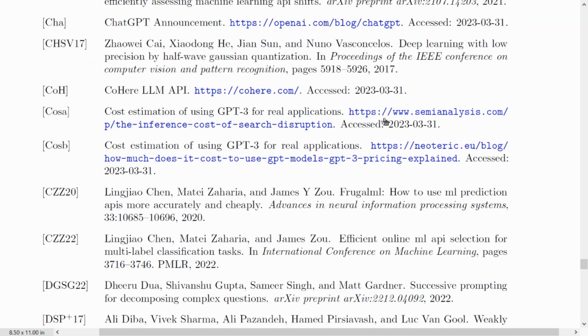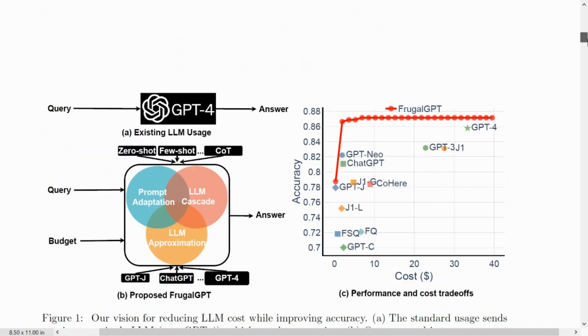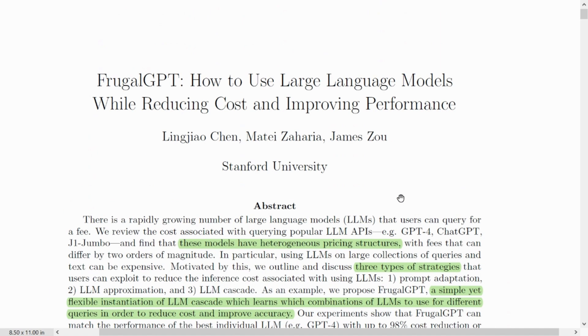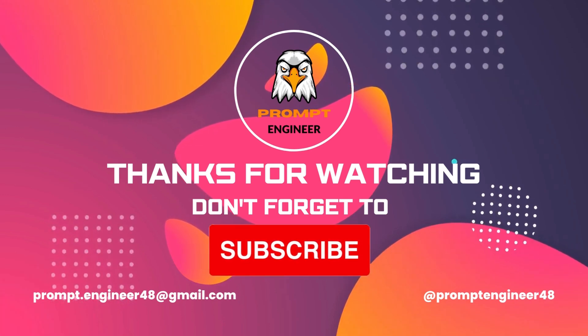I will put up a link of this paper in the description section. I urge you to have a look at this paper because this is an amazing paper that you can have your hands on. FrugalGPT can match the performance of the best individual LLMs with up to 98% cost reduction and improve the accuracy of GPT-4 by 4% with the same cost. This is huge. Thanks for tuning in. This was FrugalGPT by Prompt Engineer. If you liked this video, please like and share this video to your friends and families. Please consider subscribing to my channel as that would help me boost my morale for creating such interesting videos in future as well. Signing off, Prompt Engineer. Have a nice day. Thank you. Bye-bye.